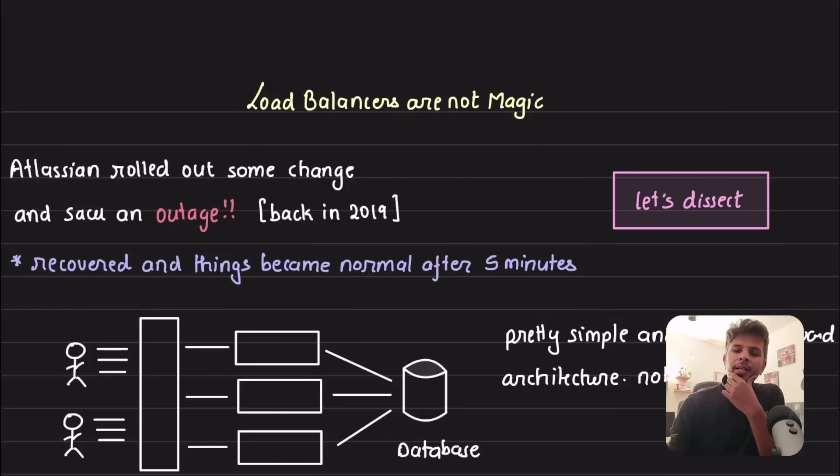Back in 2019, Atlassian rolled out some change and after some time they saw an outage. In this video we will dissect this outage to understand what exactly happened.